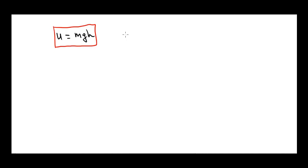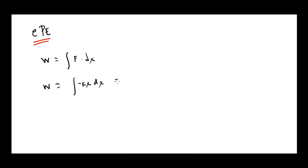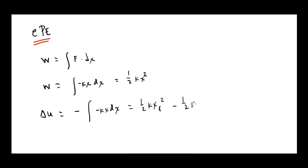Let's talk about elastic potential energy — it's going to be a very similar exercise. The only difference is that when dealing with elastic potential energy, the force is not going to be constant. The work is the integral of F dot dx, but for an elastic force: work equals the integral of negative kx dx, which reduces to one-half kx squared. So the change in potential energy for an elastic force is the negative of that — negative of negative kx dx — giving us one-half k x-final squared minus one-half k x-initial squared.